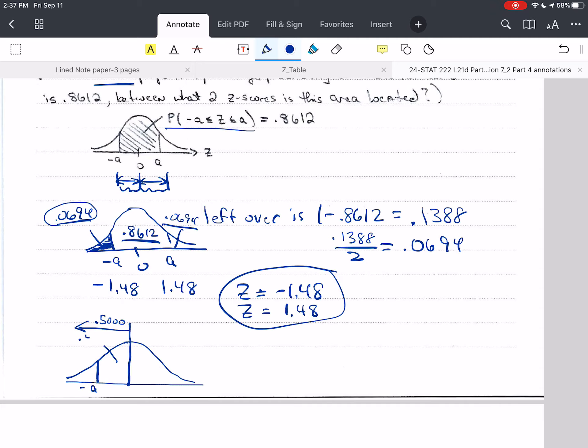And so I know if this is negative a and the total in the middle is 0.8612, then this has to be 0.8612 over 2, which is 0.4306. So only half of this can be over on that half, the other half would be over here.